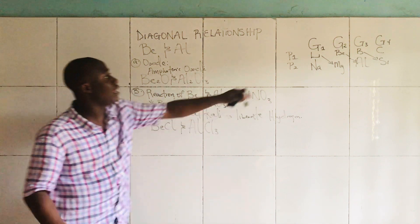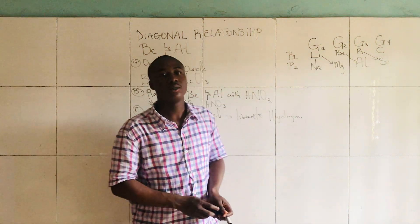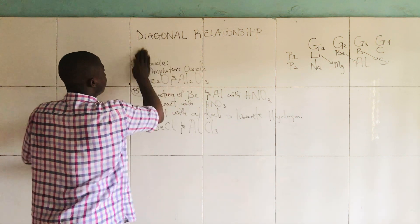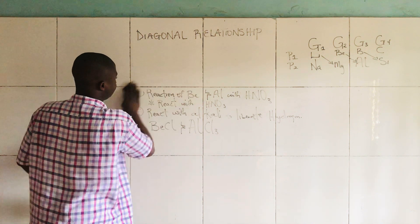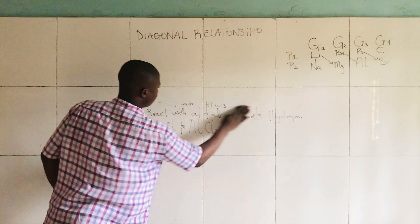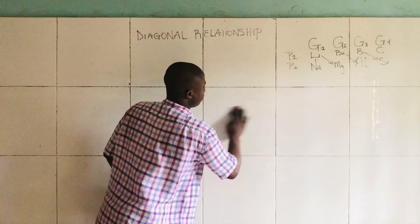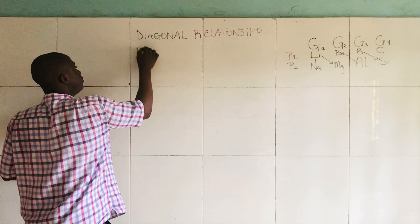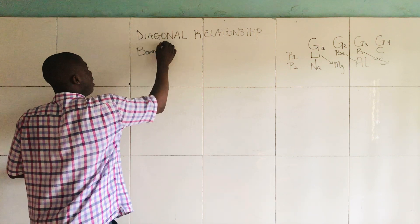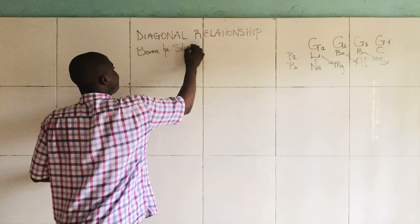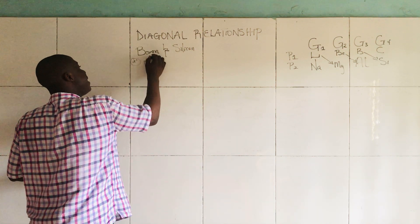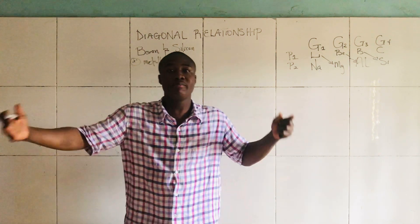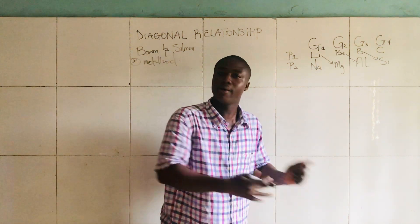Now let me talk about the last diagonal relationship concept, which is Boron and Silicon. The diagonal relationship seen in Boron and Silicon: first, they are both metalloids. Metalloids are elements found in between, midway between being a metal and a non-metal.